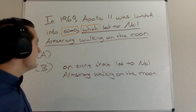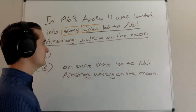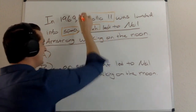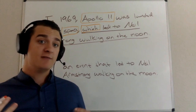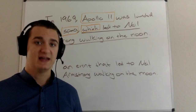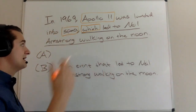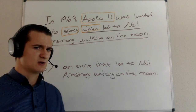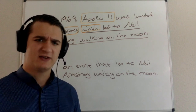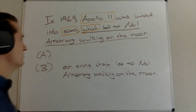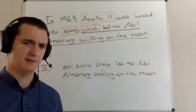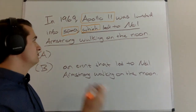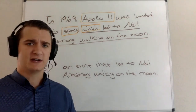I could maybe say it refers back to Apollo 11 — Apollo 11 led to Neil Armstrong walking on the moon. But that's so far back in the sentence, and the noun closest to 'which' that it would most reasonably modify is 'space.' Also, Apollo 11 is all the way back at the very beginning. And I'm not sure I could say Apollo 11 — a spacecraft — led to Neil Armstrong walking on the moon. A spacecraft led to Neil Armstrong walking on the moon? No, that doesn't work either. So 'which' seems to refer to the wrong thing in option A.